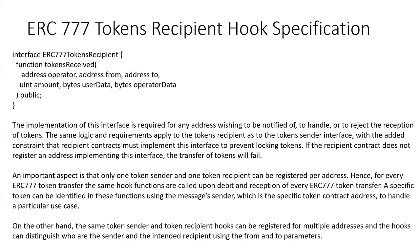A specific token can be identified in these functions, so there are specific sender and recipient roles for those particular tokens. On the other hand, the same token sender and token recipient hooks can be registered for multiple addresses. The hooks can distinguish who the sender and recipients are using the from and to parameters — address from and address to.